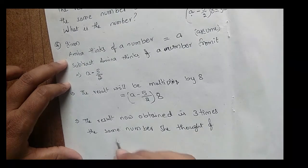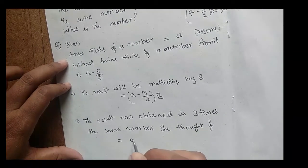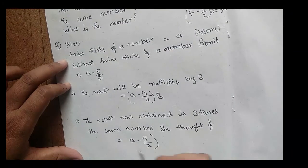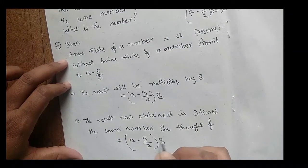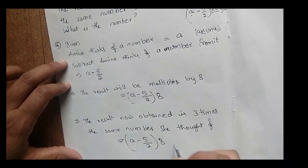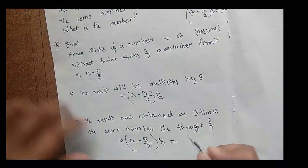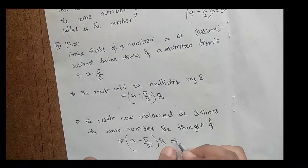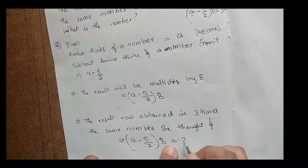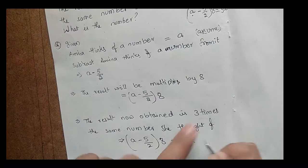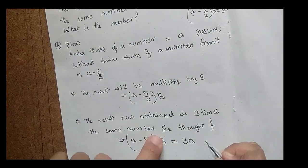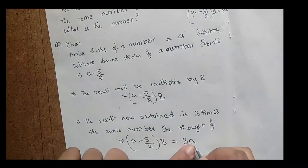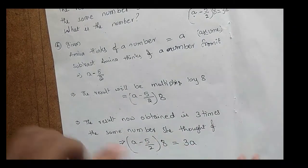So that means (a - 5/2) × 8 equals the result, and it must be equal to 3 times the same number — that is, 3 × a. Now we have to simplify it.